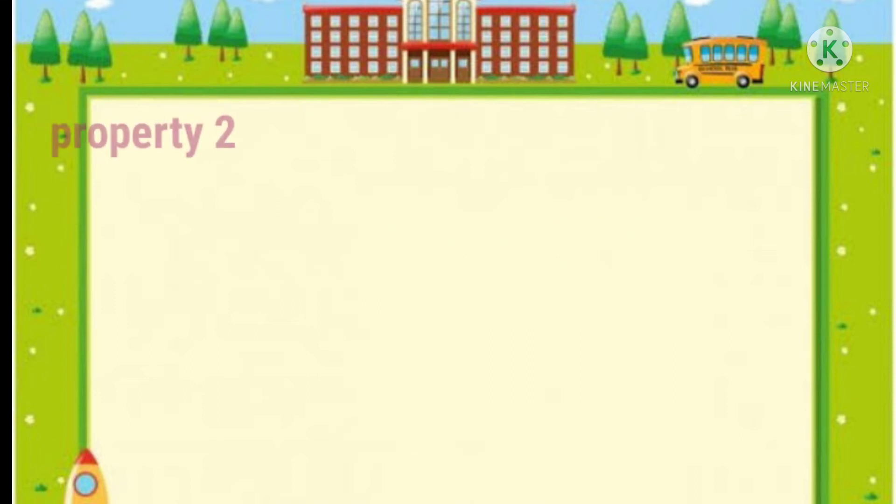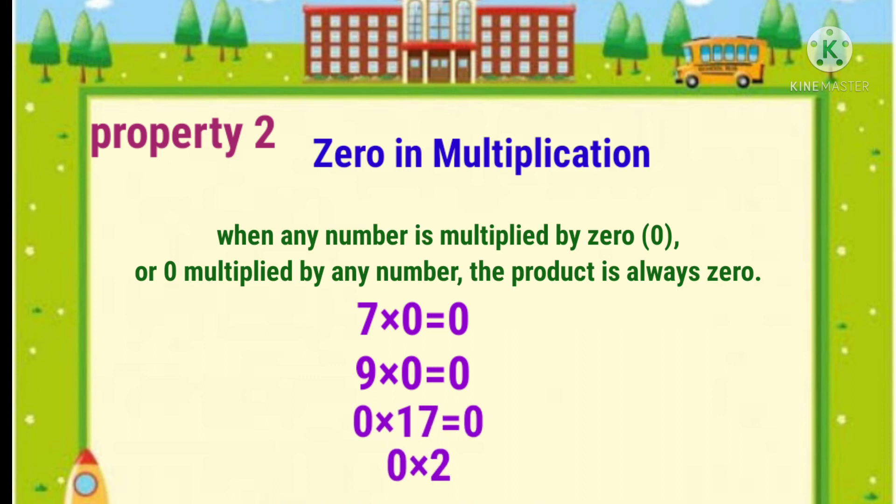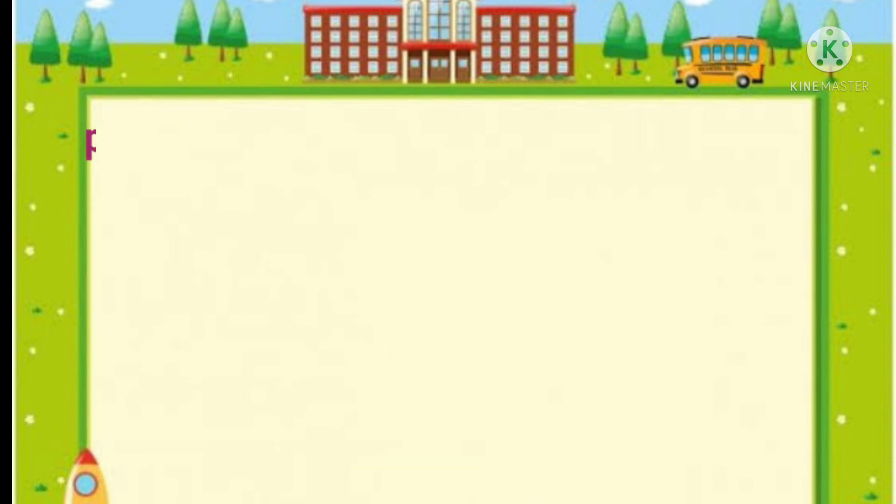Property number 2: Zero in multiplication. When any number is multiplied by zero or zero multiplied by any number, the product is always zero. For example, seven into zero is equal to zero. Nine into zero is equal to zero. Zero into seventeen is equal to zero. Zero into twenty-five is equal to zero.